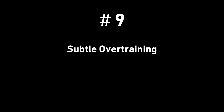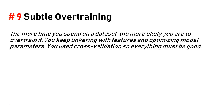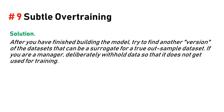Number nine: subtle overfitting. The more time you spend on a dataset, the more likely you are to overfit it. You keep tweaking features and optimizing model parameters, you use cross-validation, so everything must be good. Solution: after you have finished building the model, try to find another version of the dataset that can serve as a surrogate for a true out-of-sample dataset. If you are a manager, deliberately withhold data so that it does not get used for training.